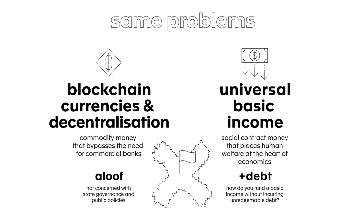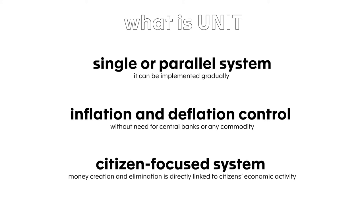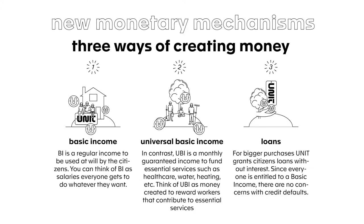So I've tried to combine some of the features of these models to design a form of money that is both mathematically viable and focused on a fair social contract. Introducing UNIT — a monetary model for the future of state money. UNIT can be implemented gradually alongside the current model. It contains a set of monetary mechanisms to keep prices stable, and contrary to the current system, UNIT creates money directly into citizens' accounts as a form of basic income. UNIT creates money in three different ways: first, through a basic income, where a regular amount of units is created directly to all adults' current accounts to be spent at will.